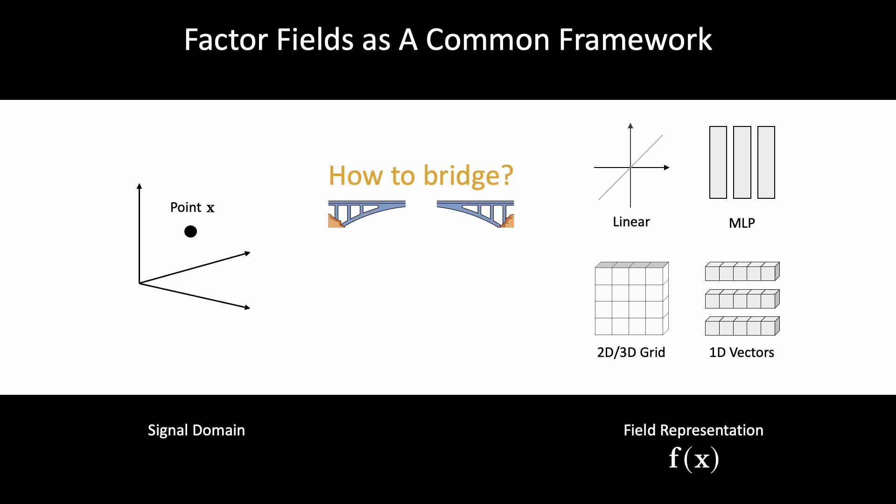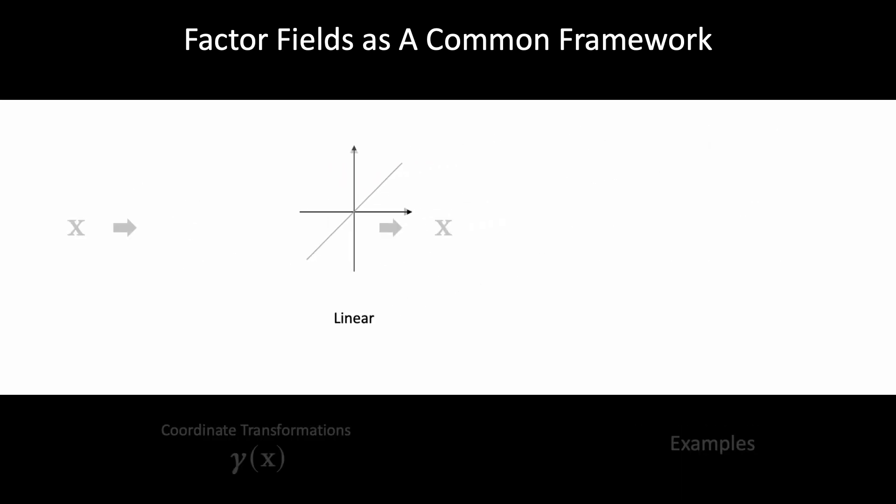The first question comes: how to bridge the scene coordinate and the field coordinate systems? The answer to this question is the coordinate transformation function. Given the position in the scene space, output the position in the field space.